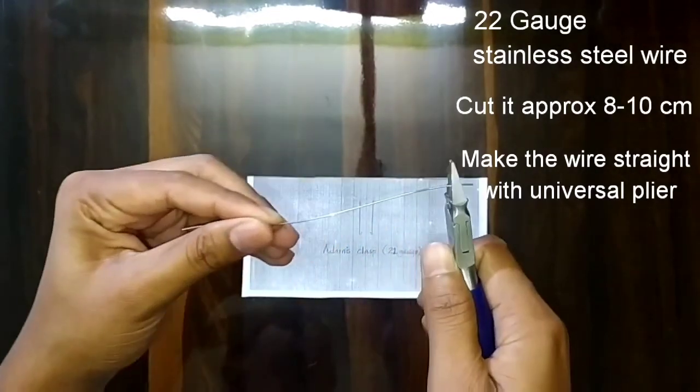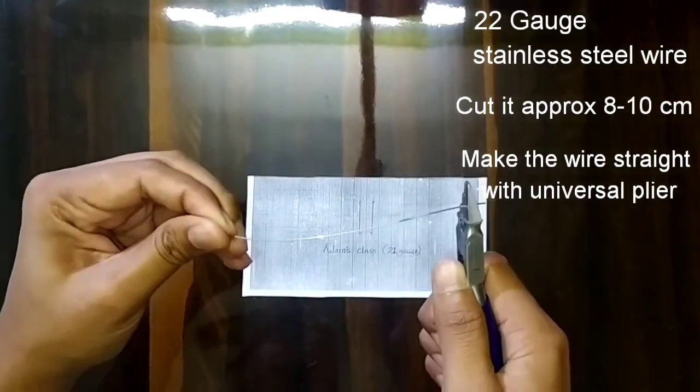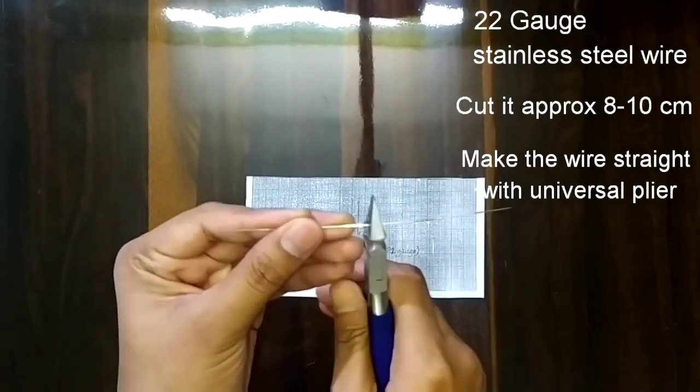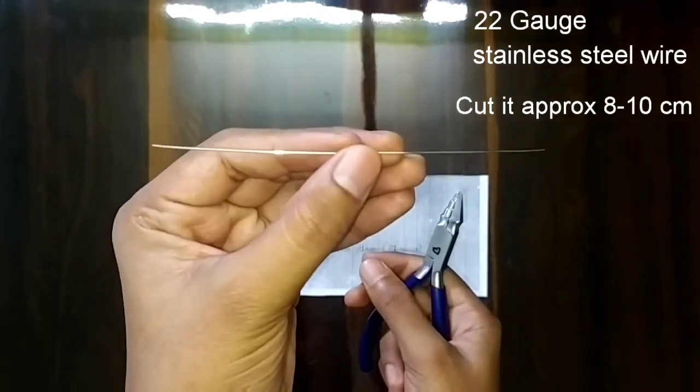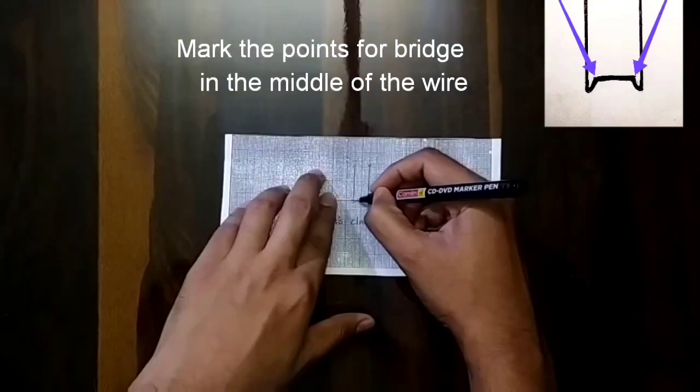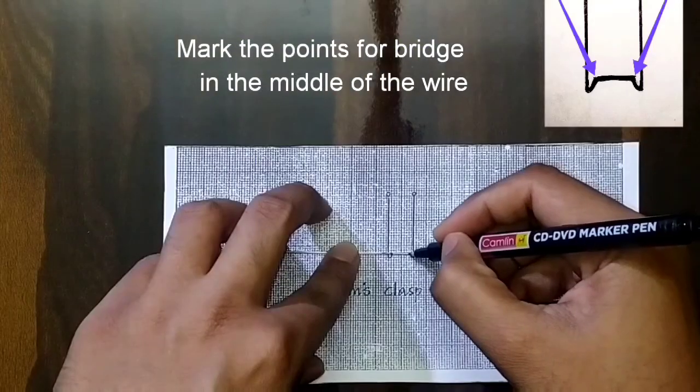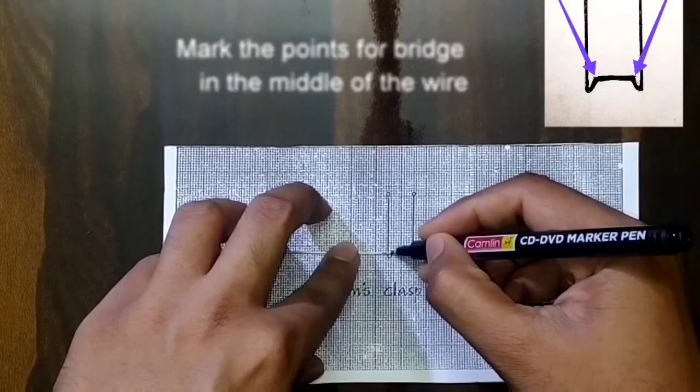Hold the wire at one end with the plier and apply pressure with fingers to make it straight. Now the wire is almost straight. After this, we will do the marking for the bridge. We'll mark on the middle of the wire.